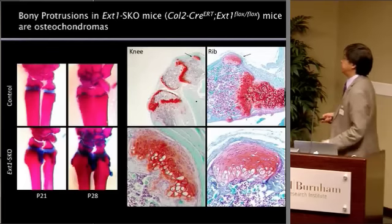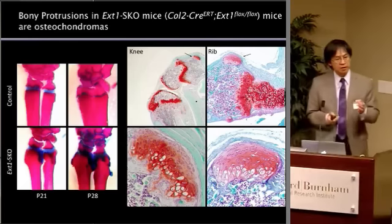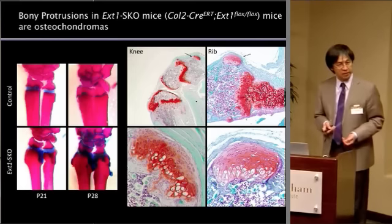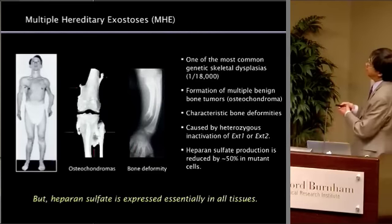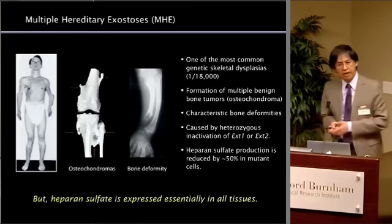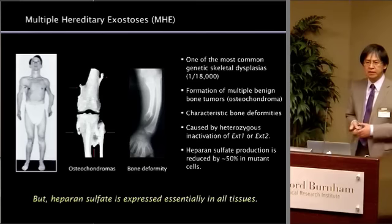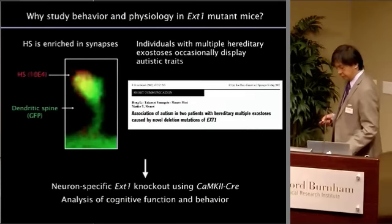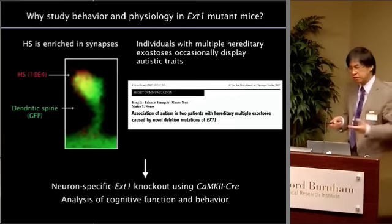Previously we showed that one of the mechanisms for osteochondroma formation is the loss of heterozygosity of EXT1 or EXT2 genes. But I'm not going to get into that today. The question is: MHE manifests mainly as a bone disease, but we know heparan sulfate is everywhere — essentially every cell type and tissue has a significant amount of heparan sulfate. So what is the in vivo consequence of the lack of heparan sulfate in other tissues? We got interested in the brain, and especially the physiology, behavior, and cognitive function.